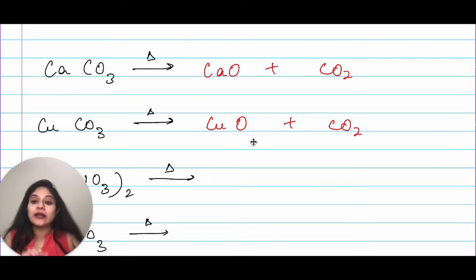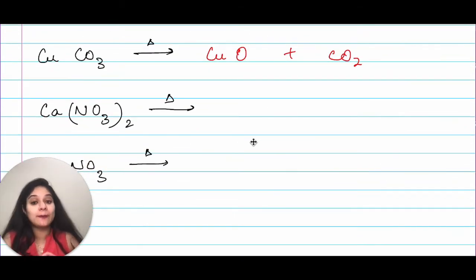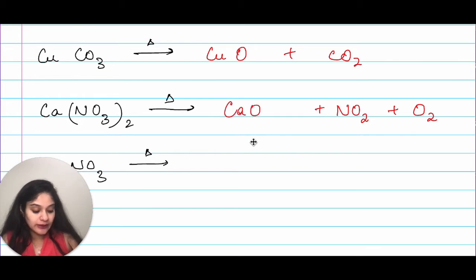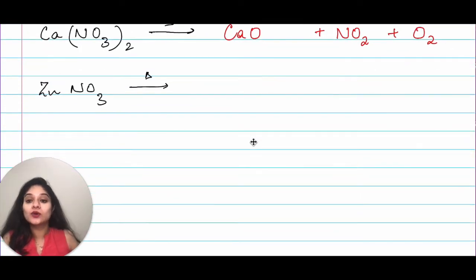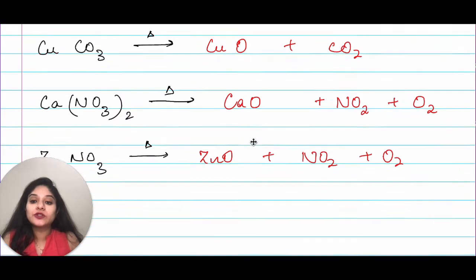If I have calcium nitrate so what would happen in nitrate? The gas that I will get would be NO2 along with that I will also get oxygen and before that I will get calcium oxide. So, calcium oxide NO2 plus oxygen. Moving on I have Zn(NO3)2 that means zinc nitrate. That will give me ZnO plus NO2 plus O2. So, this is the thermal decomposition that is happening.